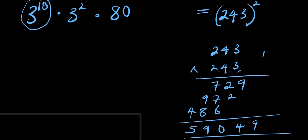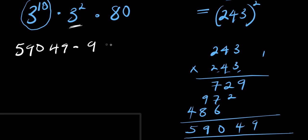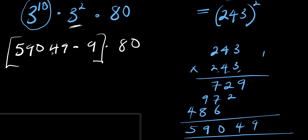So three to the power ten is fifty-nine thousand and forty-nine. Times three to the power two, which is nine. Times eighty. So let's multiply fifty-nine thousand and forty-nine times nine times eight.